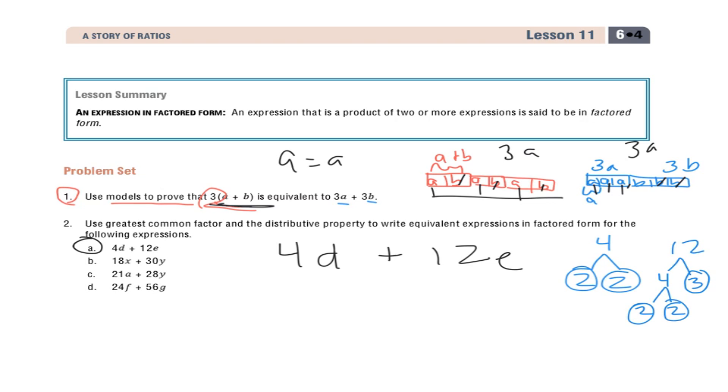So now I'm going to rewrite my expression using the factors. So 2 times 2 times D, that takes the place of 4D, plus 2 times 2 times 3 times E. And the reason why I did that is I took only the prime numbers, because 2 times 2 times 3 does equal 12. And 2 times 2 does equal 4.